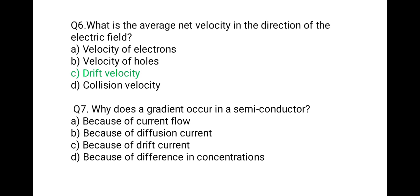Question 7: Why does a gradient occur in a semiconductor? Options: because of current flow; because of diffusion current; because of drift current; because of difference in concentration. Gradient means variation, and this variation occurs due to different concentration — one side has high concentration and the other side has low concentration, this is called gradient. The correct answer is: because of difference in concentration.